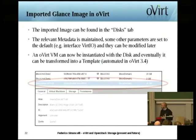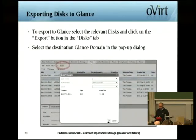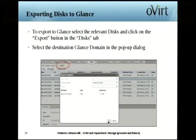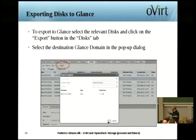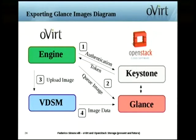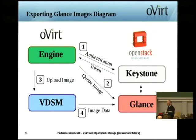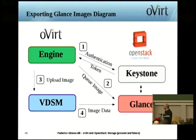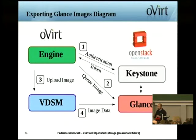We can also look at the symmetrical operation: exporting disks to Glance. You go to the disk tab, select one of the disks, and export it to a Glance storage domain. You are prompted with a dialog to select the Glance domain. Behind the scenes, the engine goes to Keystone and queues the image in Glance — we prepare all the metadata about the image in Glance, but the real upload is done by VDSM. The engine sends an upload image request to VDSM, which then streams the data from the volume in shared storage into Glance.